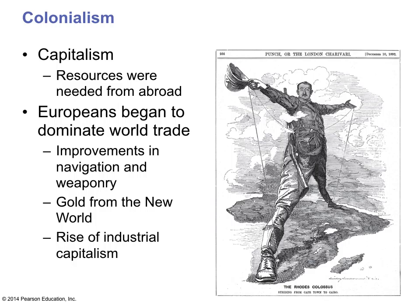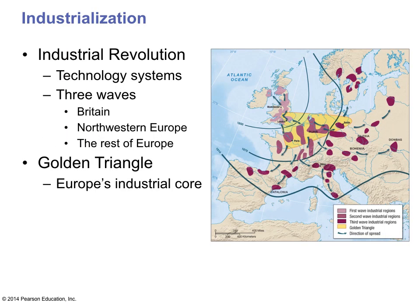Colonization was a big issue during this time. Capitalism began to flourish and resources were needed from abroad, so European countries looked for mineral resources. Europeans developed trading with their increased navigation, looking for gold and silver in the New World, and industrial capitalism began to grow, leading Europe to become a world power. The industrial revolution took place with the introduction of coal and natural gas, and you begin to see waves of technology moving from England toward the east and south.